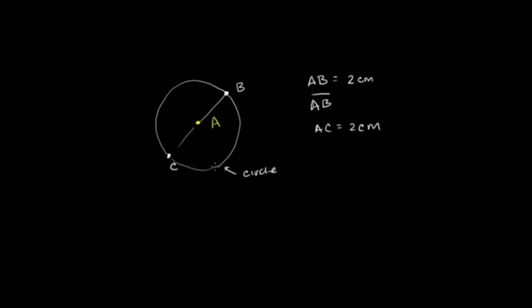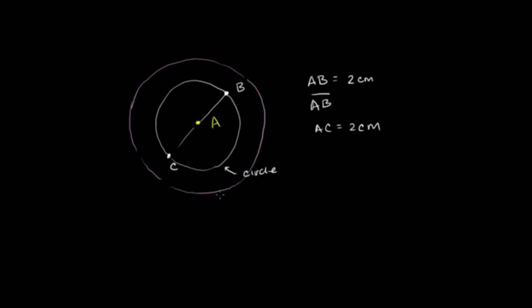That is the formal definition: the set of all points that have a fixed distance from A — a given distance from A. If I said the set of all points that are 3 centimeters from A, it might look something like that — that would give us another circle. Now what I want to do in this video is introduce some of the concepts and words that we use when dealing with circles.